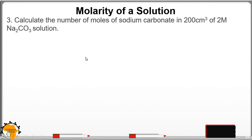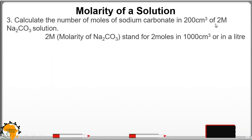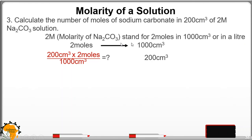Example 3: Calculate the number of moles of sodium carbonate in 200 cm³ of a 2 M sodium carbonate solution. First, interpret: 2 M means 2 moles in 1,000 cm³ or 1 liter. Written as 2 moles in 1,000. What about in 200 cm³? This part is very crucial — always remember the meaning of 2 Molarity, which is 2 moles in 1,000. Cross-multiplying gives 0.4 moles of sodium carbonate.